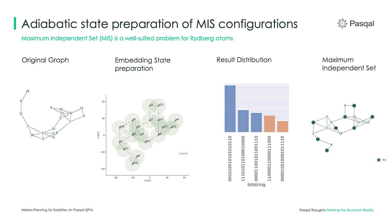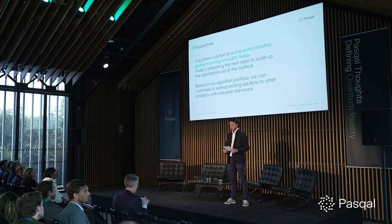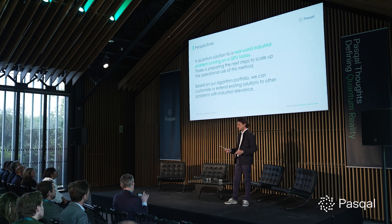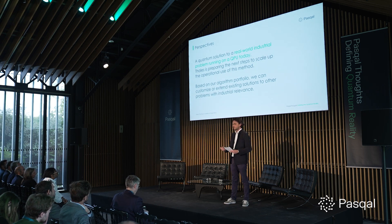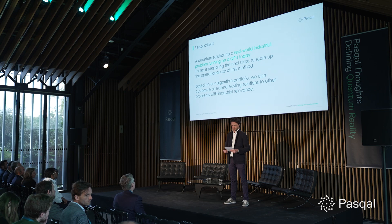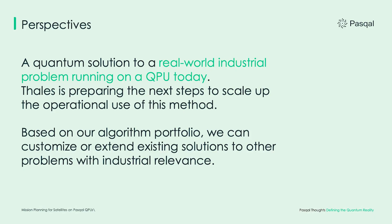During this project we used state-of-the-art methods combined with our quantum maximum independent set solver, and we managed to solve a real-world industrial problem that has been implemented on a QPU today. At this stage, classical methods are still ahead in terms of raw performance, but based on our roadmap we believe this type of method can be competitive soon. With our partners at Thales, we are preparing the next steps to scale up the operational use of this quantum approach to satellite constellation mission planning.